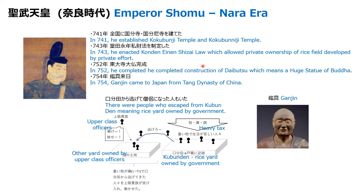The next era is the Nara era. In the Nara era, there was Emperor Shomu, who also thought Buddhism was important. A kind of disease spread in Japan, and so Emperor Shomu wanted to use Buddhism for the people. He established Kokubunji and Kokubun Niji temples.